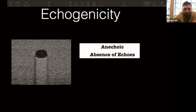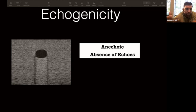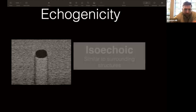Hyperechoic means white; anechoic is black. That black space is called anechoic — absent of echoes — because the ultrasound waves travel through a structure with no issue. Think about fluid-filled structures such as the eyeball or the liver; those ultrasound waves travel straight through. So an abscess, a vessel — those are going to be anechoic, black. Isoechoic is anything like the surrounding structures, more in the gray scale.